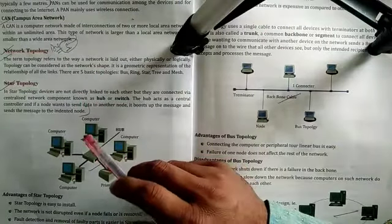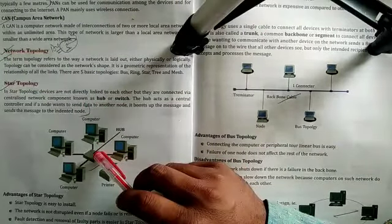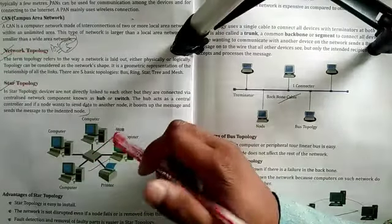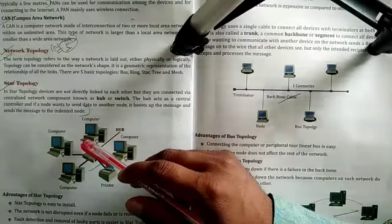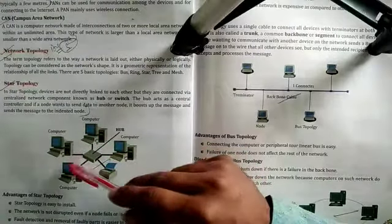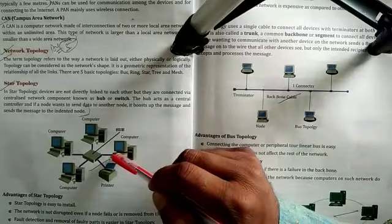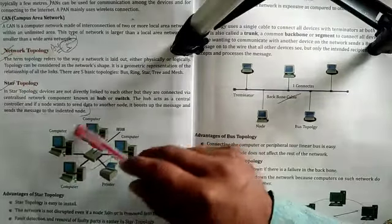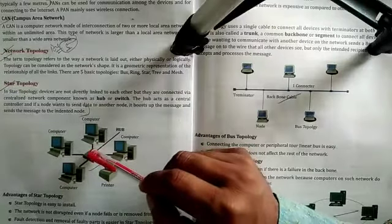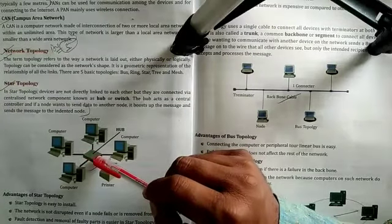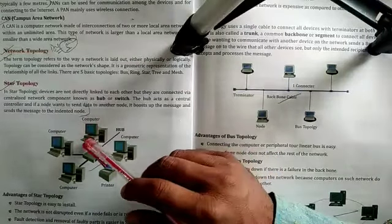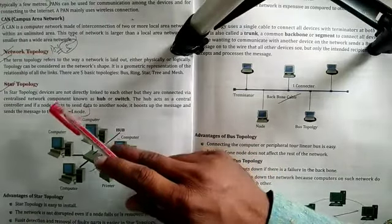The first we will discuss is star topology, and then bus topology and ring topology. According to star topology, there is a shape. With the help of this shape we can easily understand that all these nodes are directly linked to a centralized network. This centralized network is called the hub.